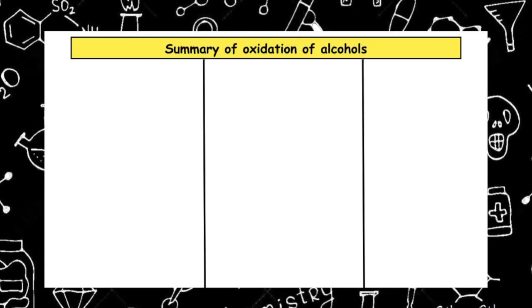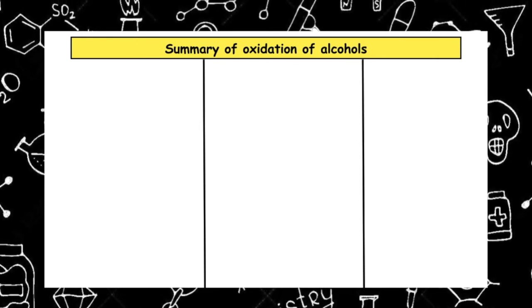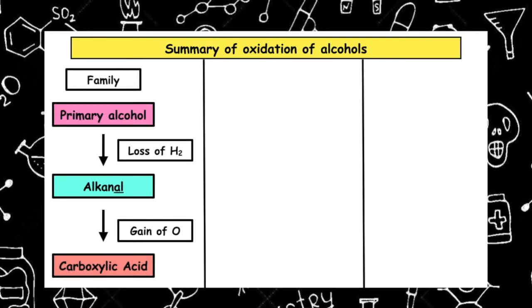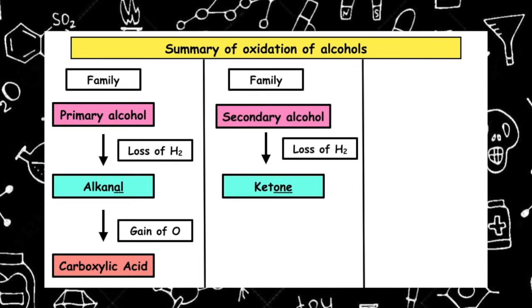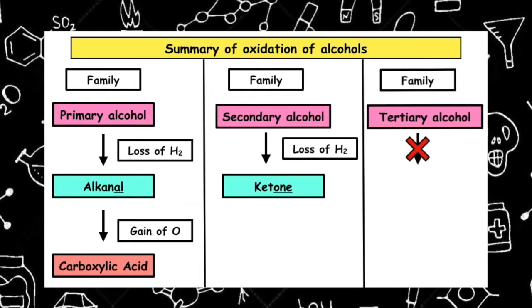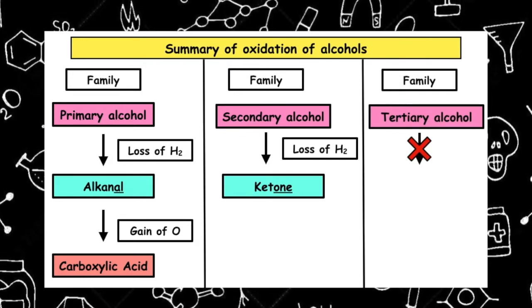To summarize the oxidation of alcohols, we need to know that primary alcohols can undergo two stages of oxidation, secondary alcohols undergo one stage of oxidation, and tertiary alcohols do not undergo any stages of oxidation.